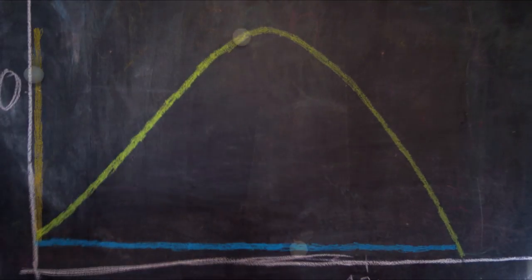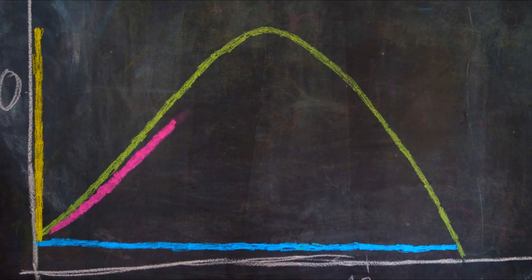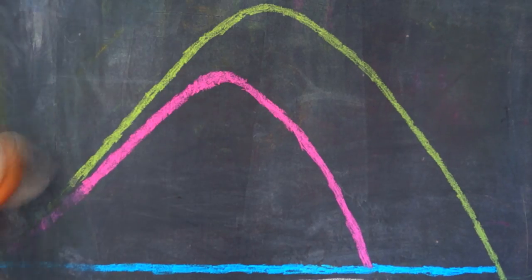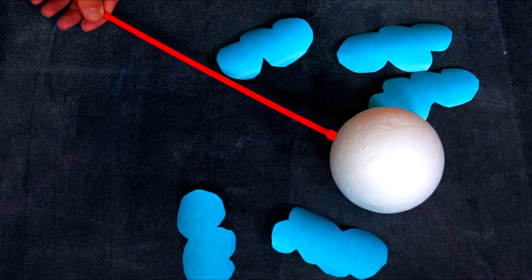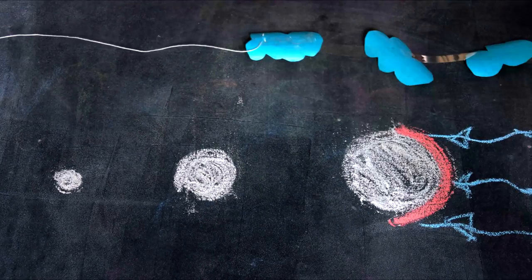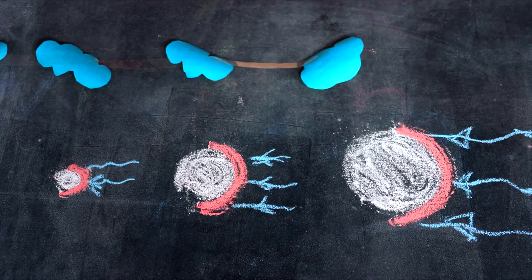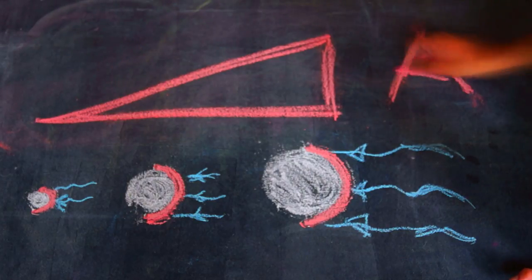But in real life things are a little bit more complicated. The stone faces an obstacle on its way and that is air. So the real trajectory would be the purple one. But what exactly is air resistance? As the stone flies, it pushes aside all the molecules that are in the air. The bigger the ball, the more molecules are pushed aside as more material surface is in contact with the air. The bigger the attack surface A is, the higher will be the air resistance.